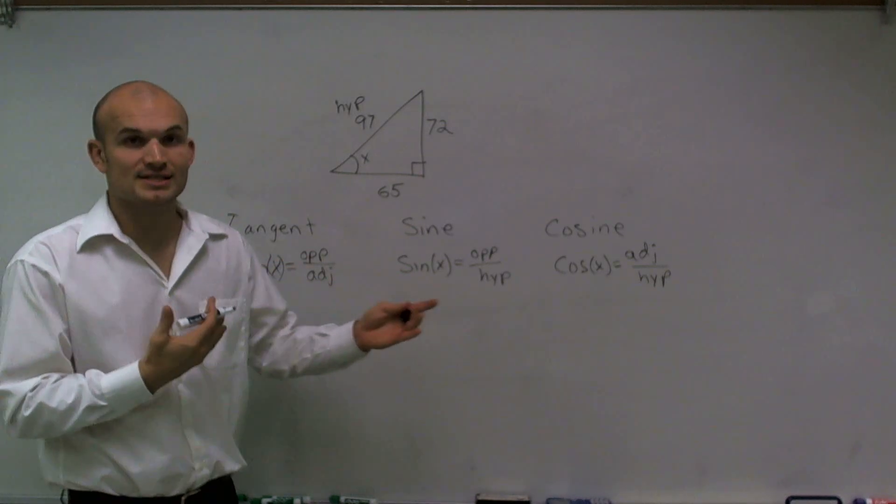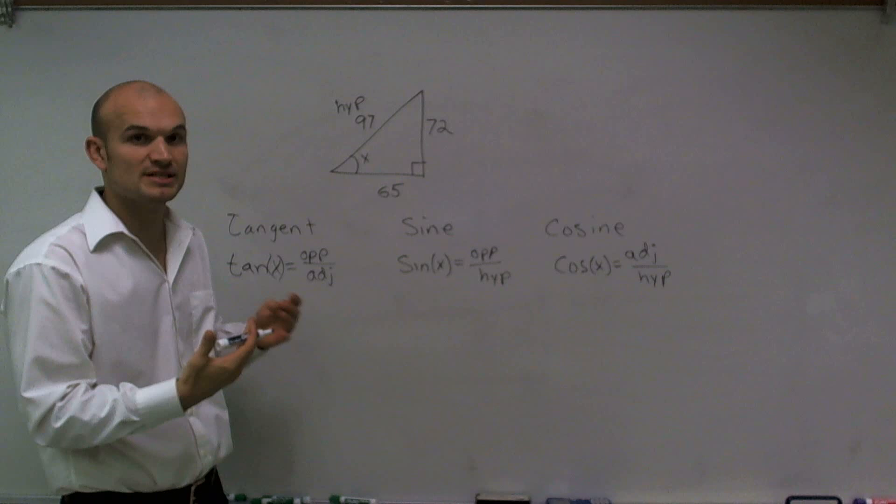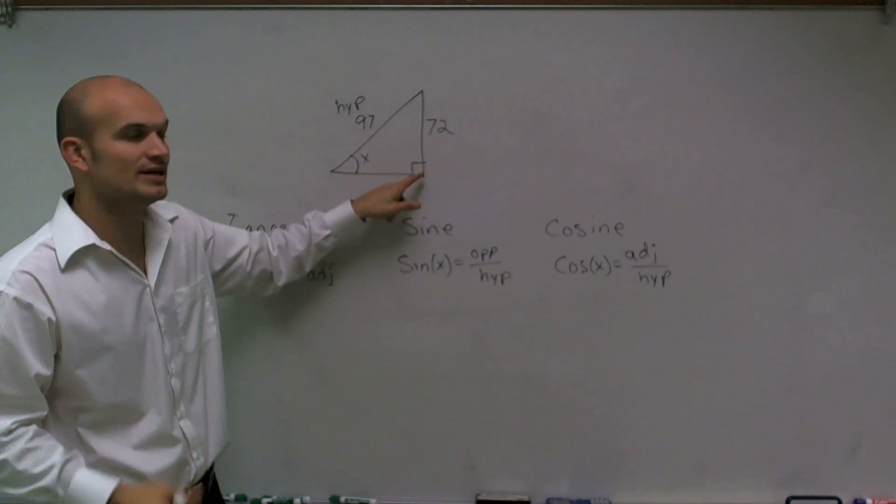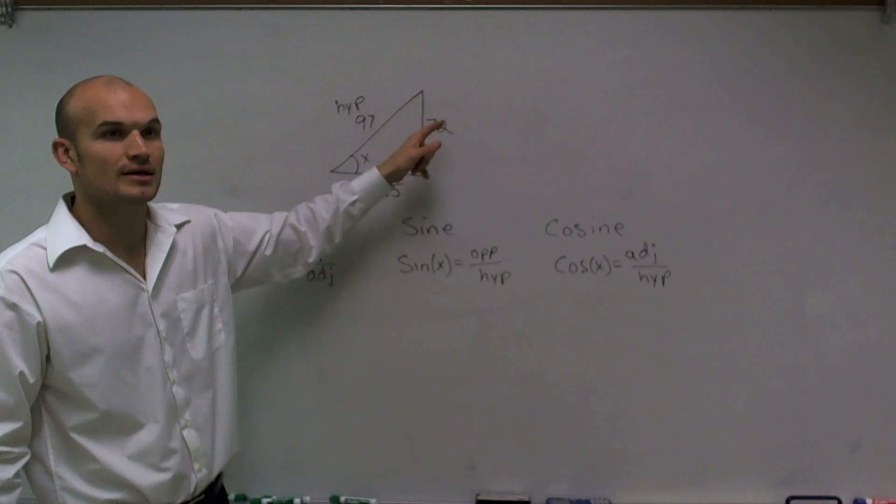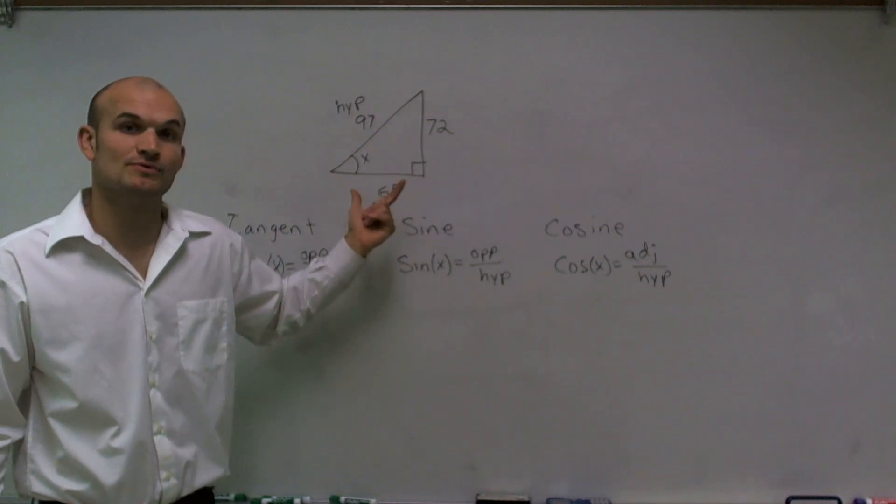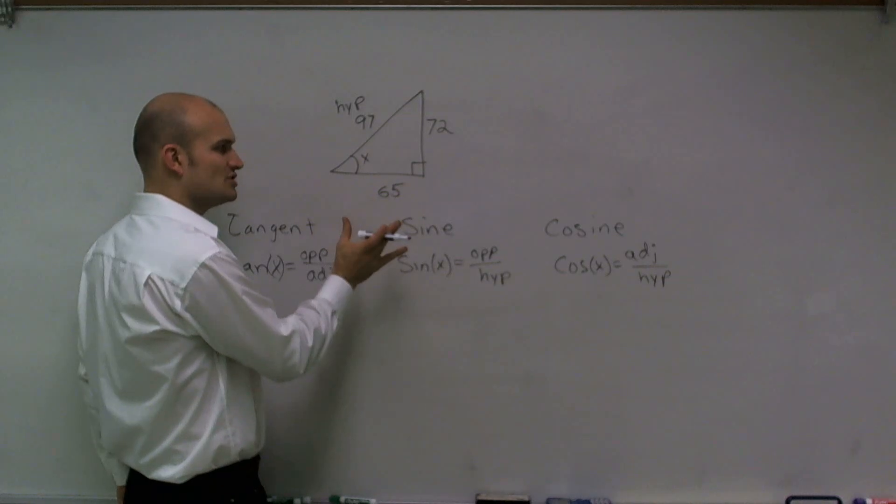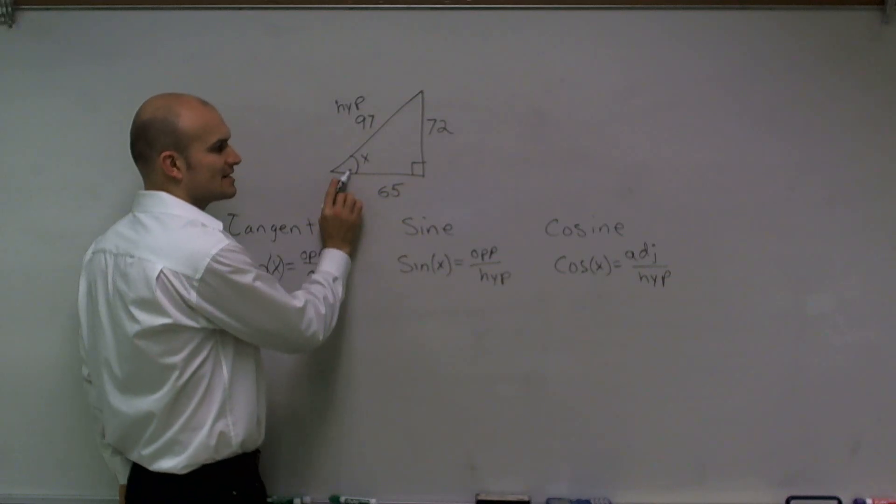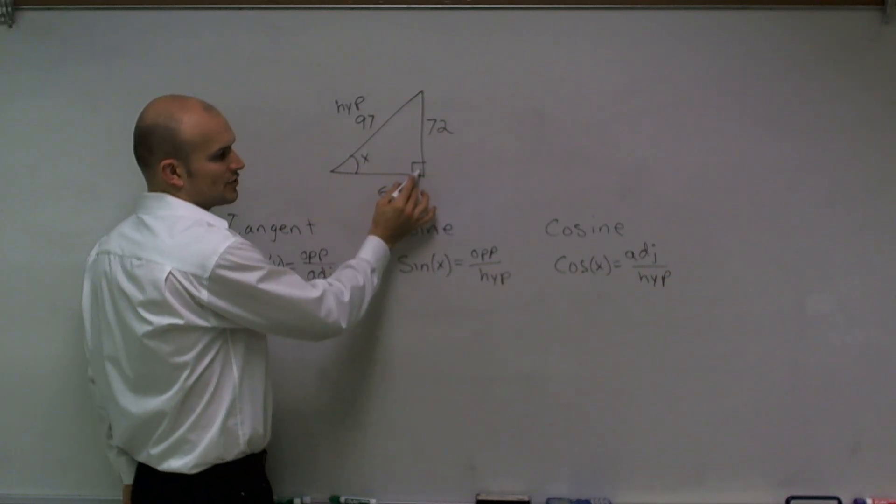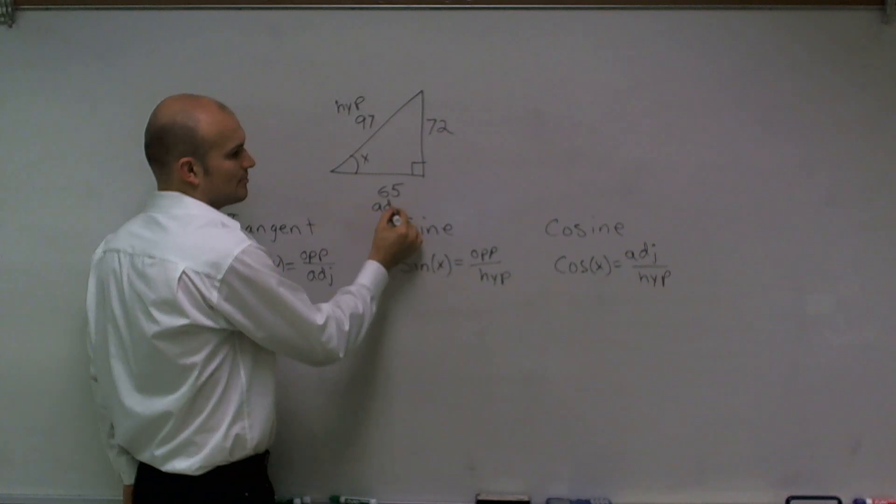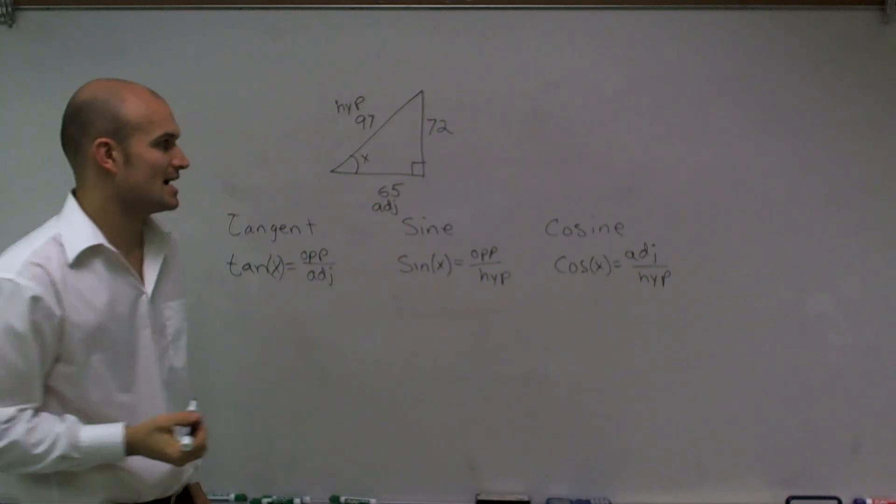Your opposite and your adjacent are always going to change depending on which angle you have. Depending on which angle I choose is going to determine which one is my opposite, which one is my adjacent. If I have this angle x, the side that's adjacent is the side length that connects your angle with your 90-degree angle. Therefore, 65 is going to be my adjacent side.